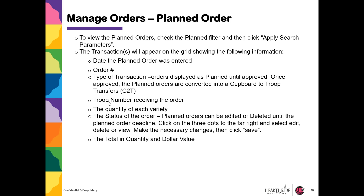Let's look at Planned Orders. Check the Planned Order filter and Apply Search Parameters. Information related to the order will appear, including the date, order number, the type of transaction, the troop associated with the order, the quantities, and the status of the order.